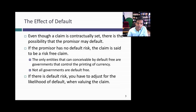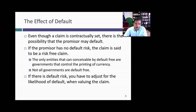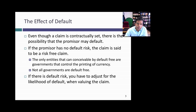Let's start by introducing the notion of default risk. Remember, in a contract, the promisor is promising to pay you the cash flows in the contract, but promisors don't always deliver on their promises. If the promisor has no default risk, the claim is said to be a risk-free claim. What kind of promisor has no default risk? The only type of promisor who has a chance of not having default risk is a government, because governments can print currency.